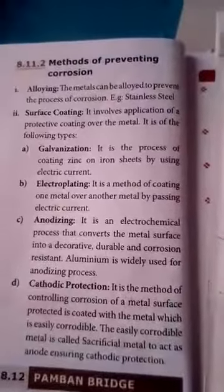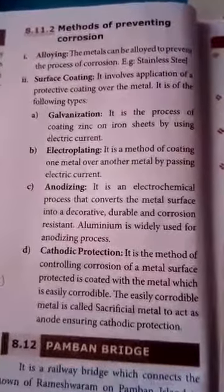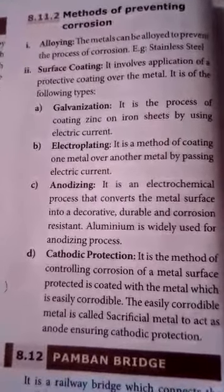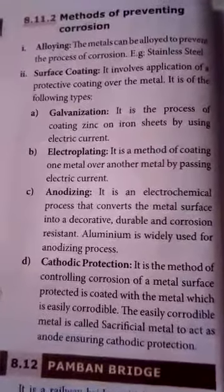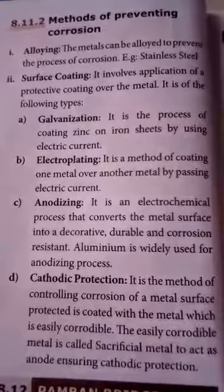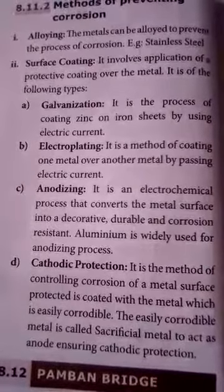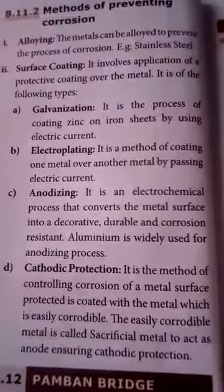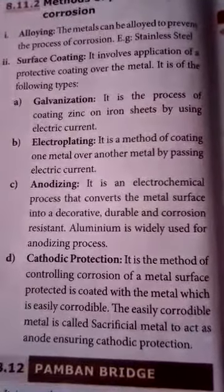The next topic is methods of preventing corrosion. The first method is alloying — the process of mixing metals to resist corrosion, for example stainless steel. The second method is surface coating, which involves the application of a protective coating over the metal. The first type of surface coating is galvanization.